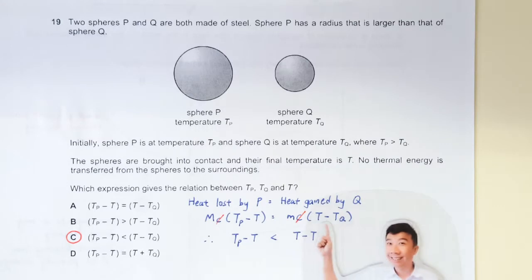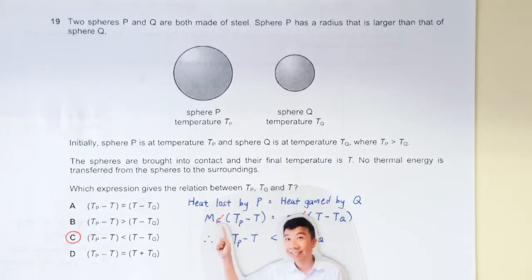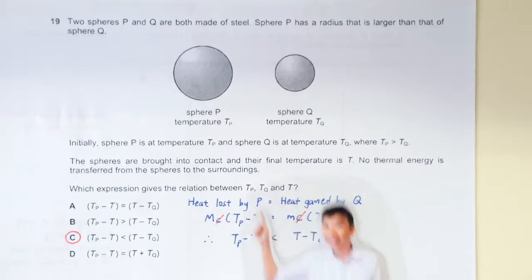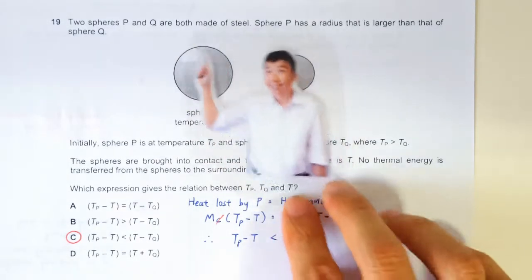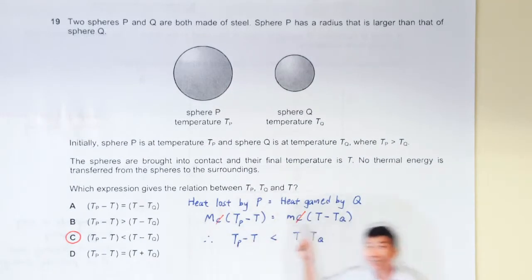We can write an equation here. Because they are both made of steel, they have the same specific heat capacity. But because this guy has a larger mass, this guy has a larger heat capacity.